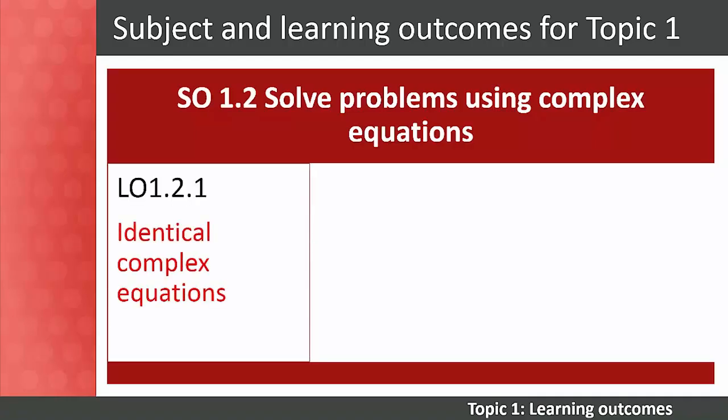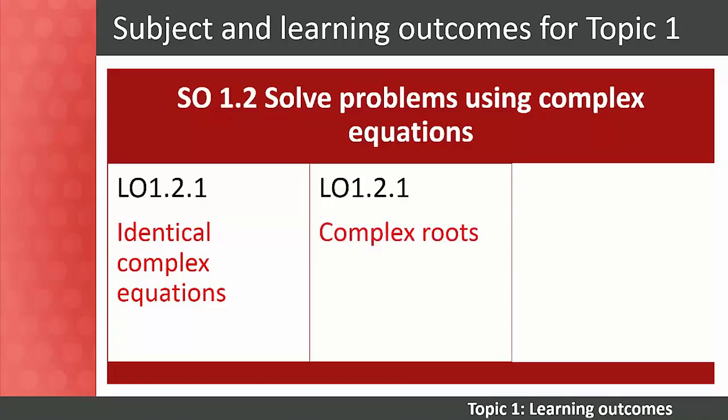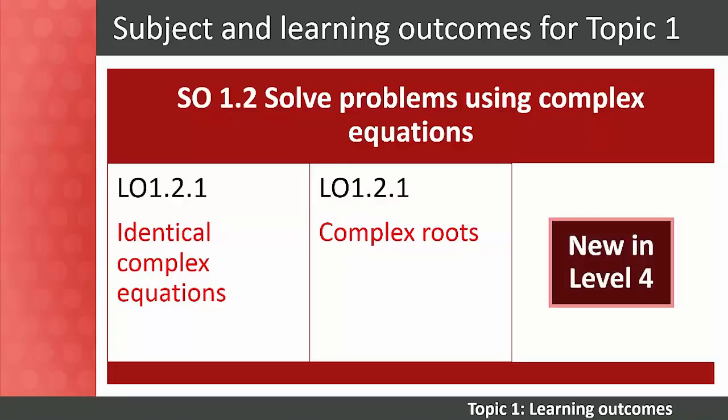By the end of Subject Outcome 1.2, students must be able to solve identical complex equations in rectangular or standard form, and use complex numbers to solve equations that cannot be solved using the real number system by applying factorization and the quadratic formula. Please keep in mind that identical complex equations and complex roots are both new content in Level 4.